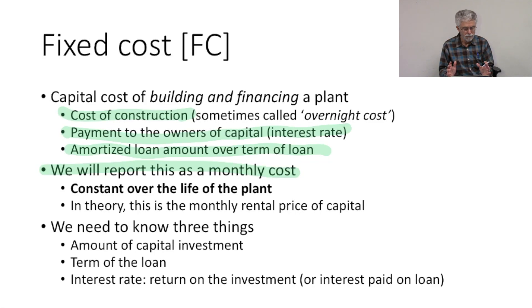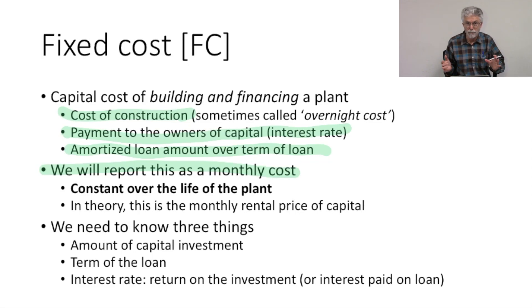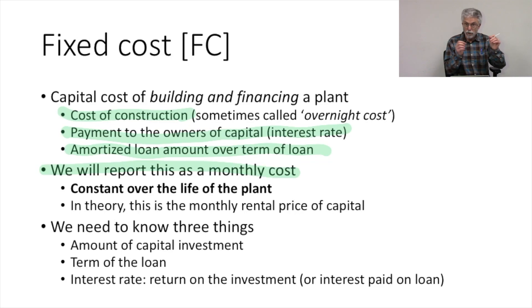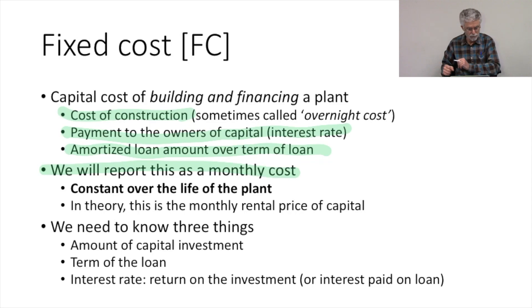There's another way we can think about the monthly cost of operating a plant. In theory, you could think about this as the cost of renting a power plant — you go out on the market and say, I need a power plant to generate electricity for the next month. In the long run, the rental price of a capital asset is the same as its amortized loan amount, because the amortized loan amount includes both paying back the capital and the rate of return that someone has to make to be willing to put that plant in place.